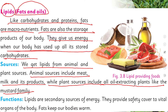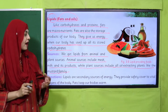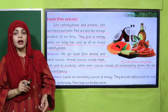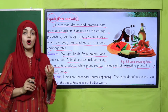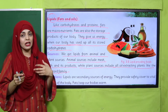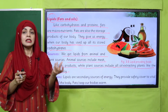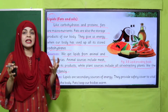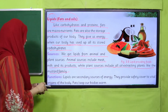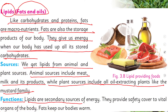From animals we use their meat and fat, while from plants we extract oil — for example, mustard oil is extracted from mustard, and sunflower oil from sunflower. This is how we obtain fat from oil-containing plants. The functions of lipids are: they are a secondary source of energy, they provide a safety cover to vital organs of the body, and fats keep our body warm.